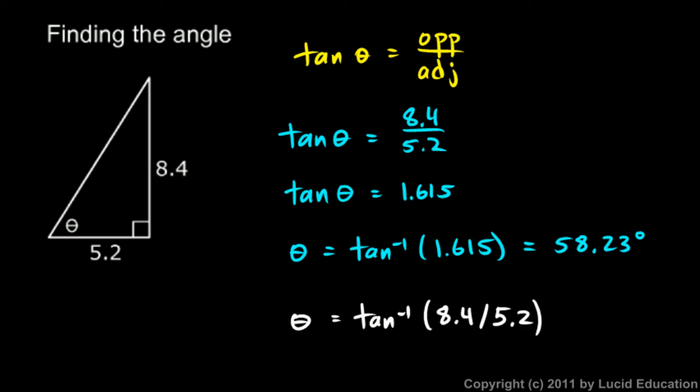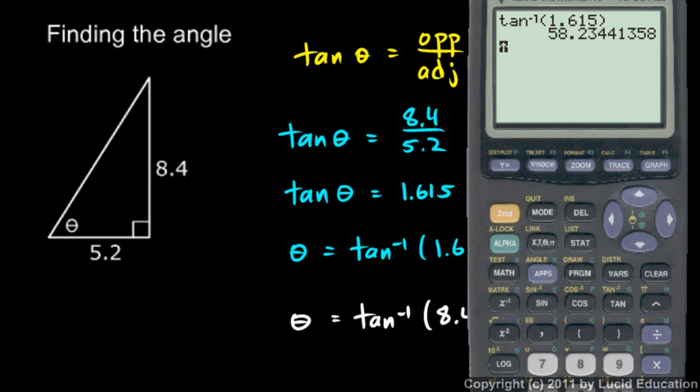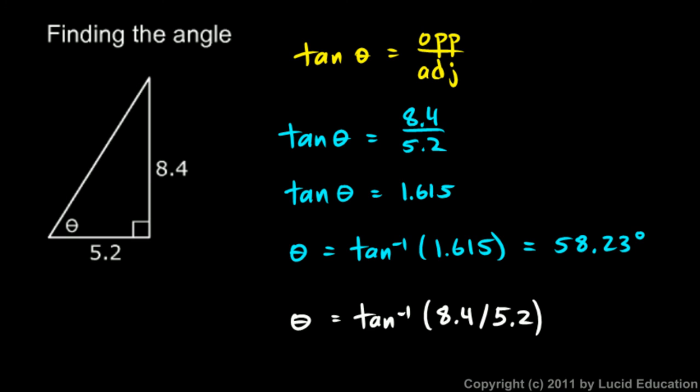We can type it into the calculator like that. Watch this: if I do the inverse tangent of 8.4 divided by 5.2, I get 58.24—a little bit different answer, 58.24.